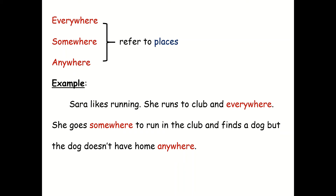Everywhere, somewhere, anywhere refer to places. Example: Sarah likes running. She runs to the club and everywhere. She goes somewhere to run in the club and finds a dog. But the dog doesn't have a home anywhere.